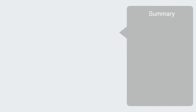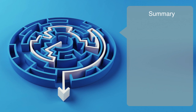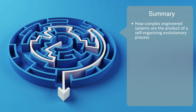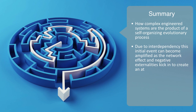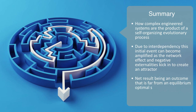In this module, we've been talking about path dependency, as we looked at how complex engineered systems are the product of a self-organizing evolutionary process. This process may involve sensitivity to some relatively arbitrary initial condition, but due to their highly interconnected and interdependent nature, this initial event can become amplified as the network effect and negative externalities kick in to create an attractor. With the technology becoming a default standard and the emergence of inertia, the net result is an outcome that is far from an equilibrium optimal solution — but instead contingent on the system's history — what we call path dependency.